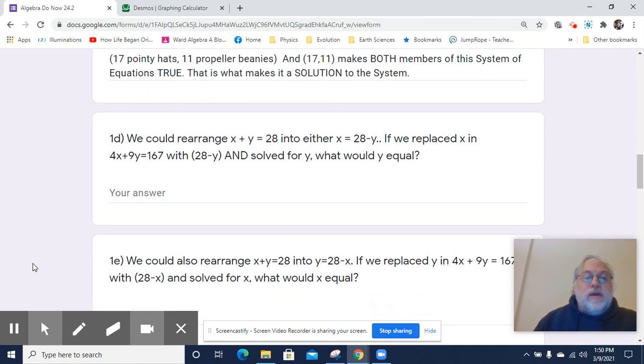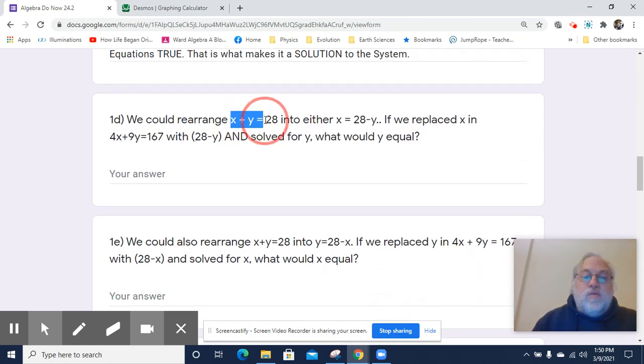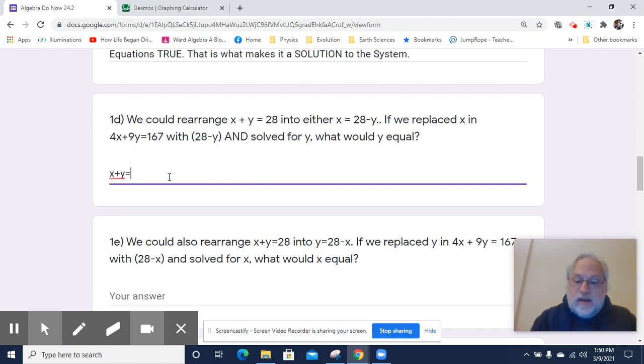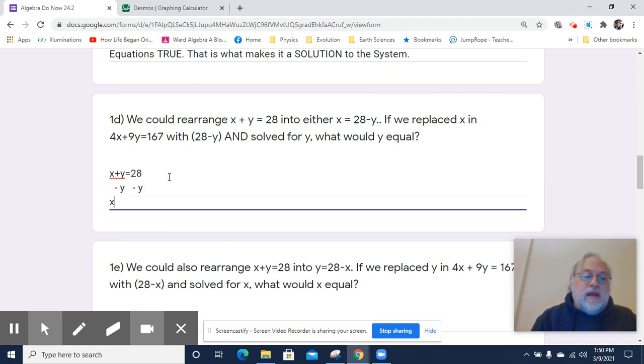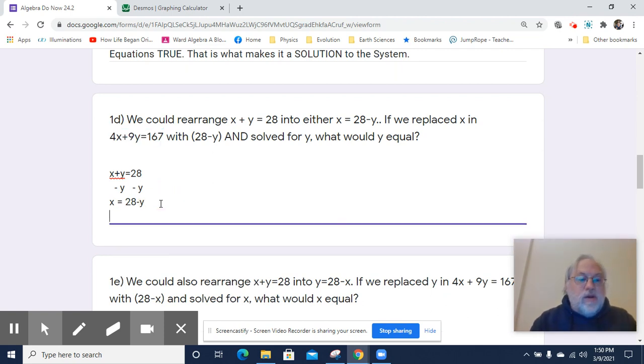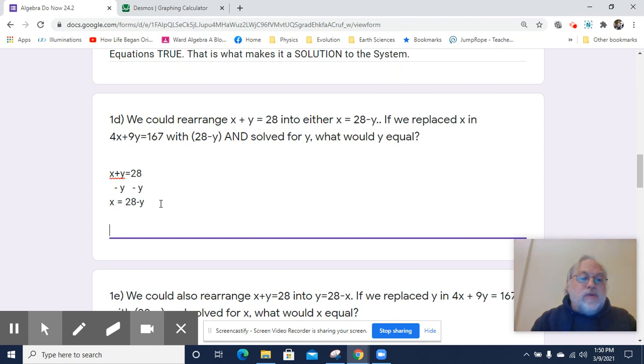Now, there's another way we can approach this. We could take X plus Y equals 28. And we can rearrange it to be X equals 28 minus Y. I'll show you how that works. X plus Y equals 28. I subtract Y from both sides. And I end up with X equals 28 minus Y.